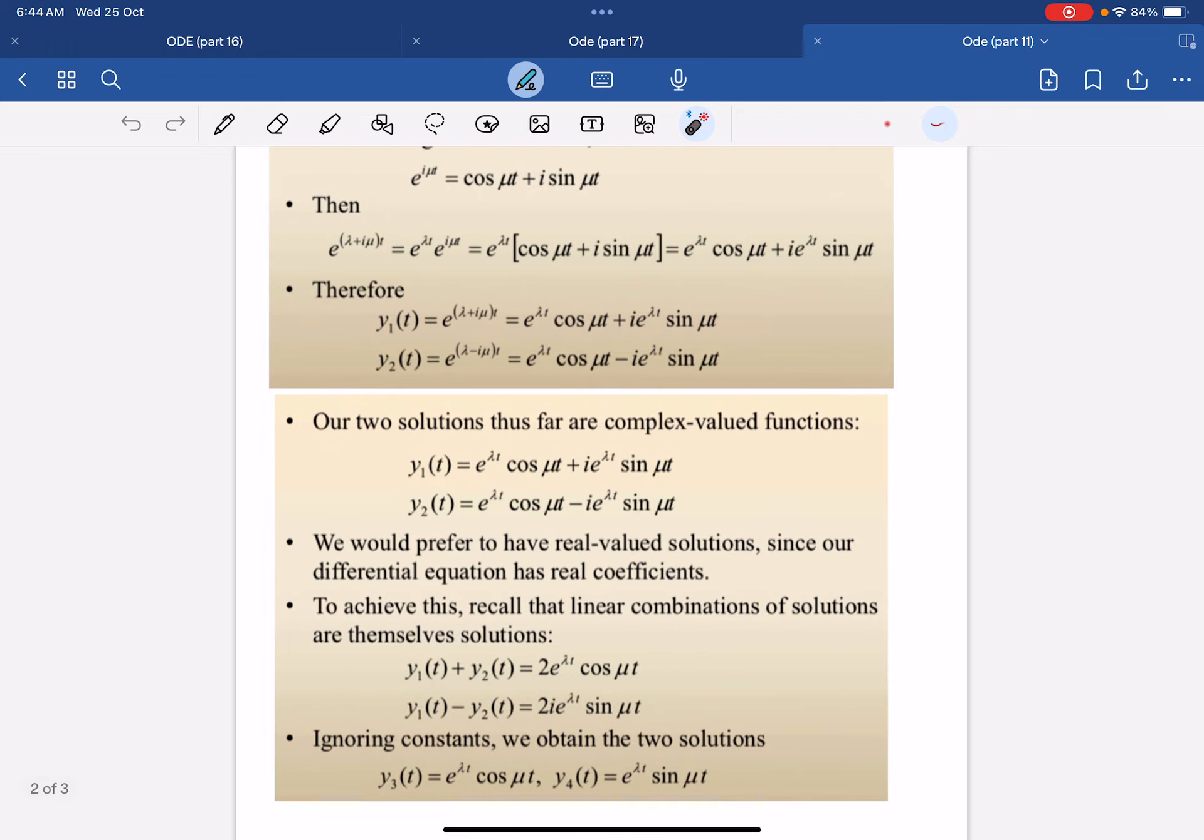And that will arrive to e lambda t cosine mu t plus i e lambda t sine mu t. And for y2 is similar, but here is minus. So these are still complex valued function, you see, got the i.